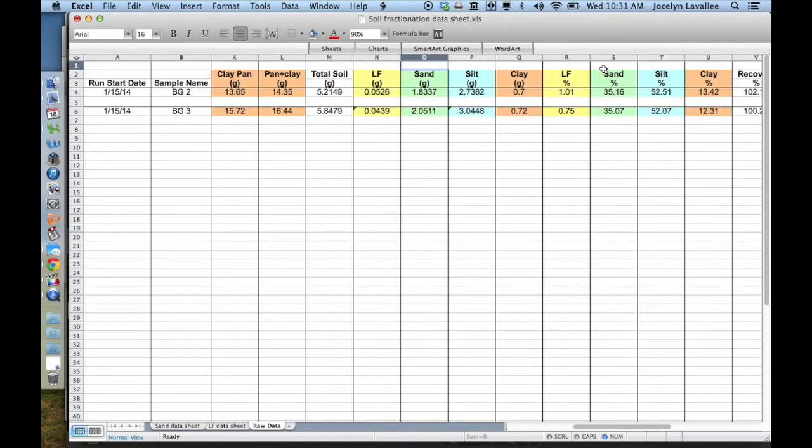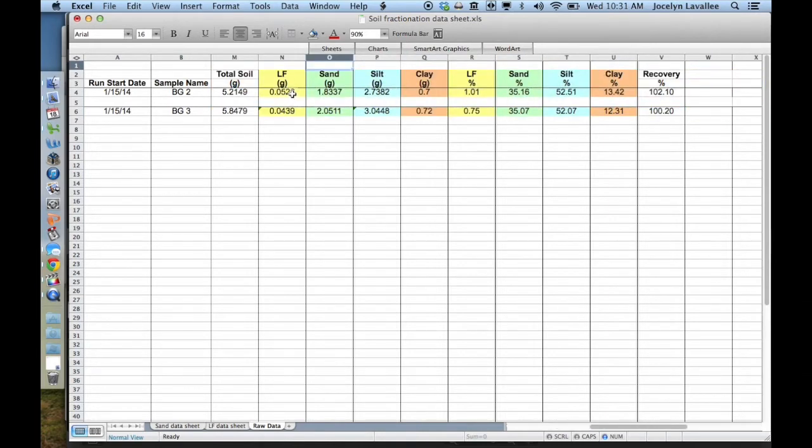So, if we move on, we can calculate how much of each fraction we've isolated, as well as the percent of total soil that each fraction represents. So, here, our light fraction is the light fraction pan plus light fraction minus the pan weight, and that's 0.0526 grams. That corresponds to 1.01% of our total soil, which we calculated by dividing light fraction mass by the total soil mass and multiplying by 100. We can do that for each of our fractions and then add up those percentages to get our total recovery.